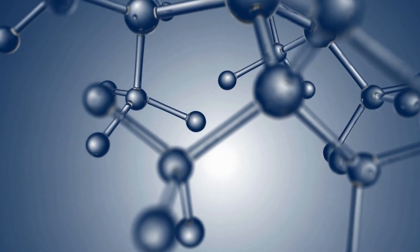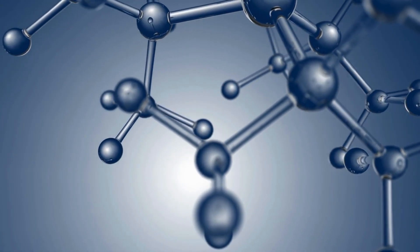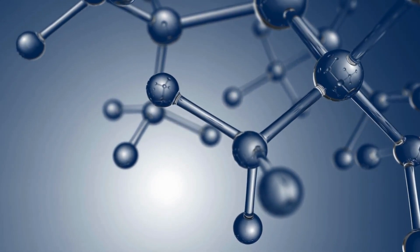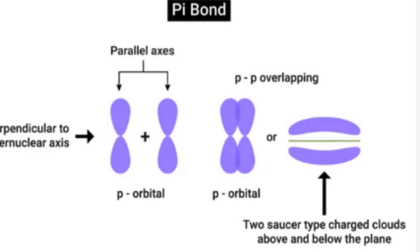Molecular Orbital Theory (MOT) Concept: MOT explains bonding in terms of molecular orbitals which are formed by the combination of atomic orbitals from all atoms in a molecule. These molecular orbitals are spread over the entire molecule, not just between two atoms.